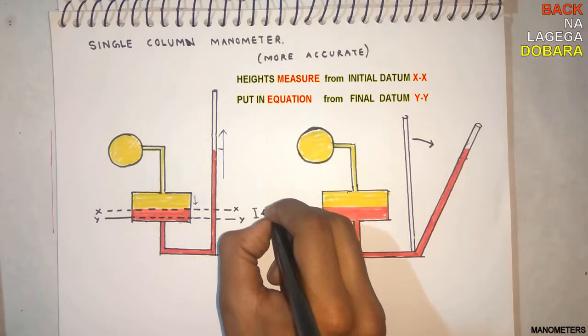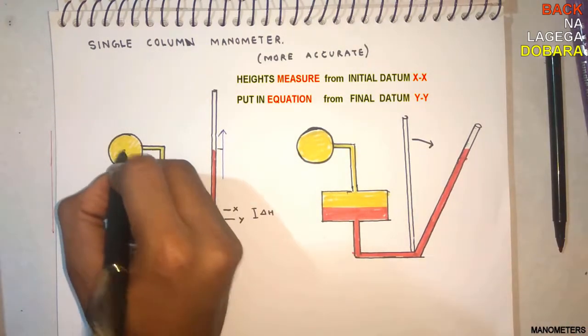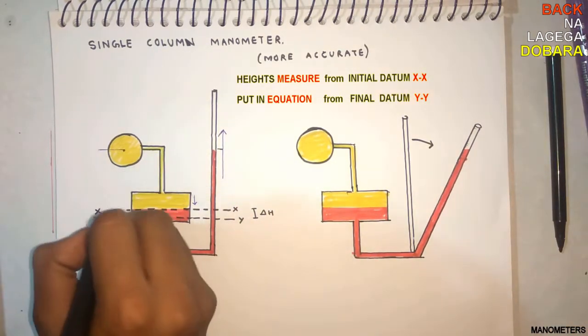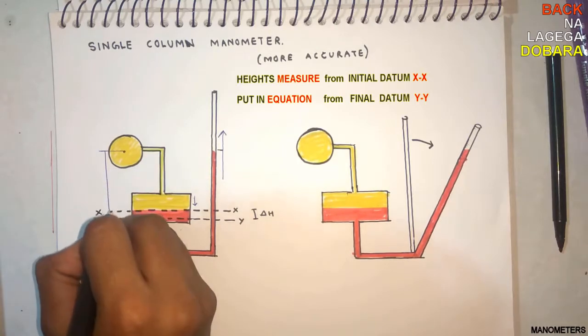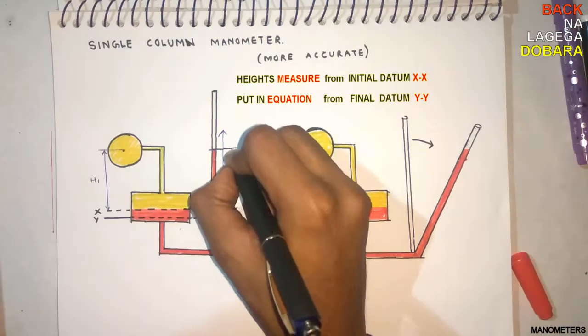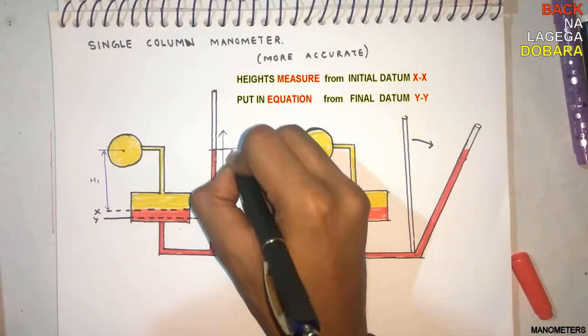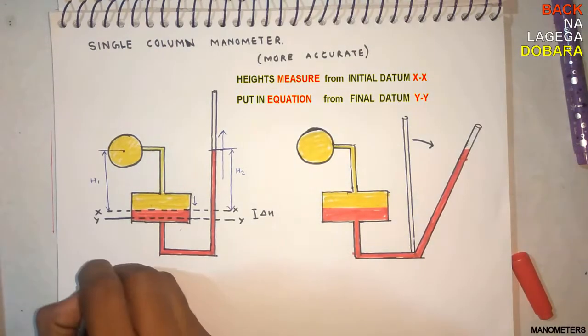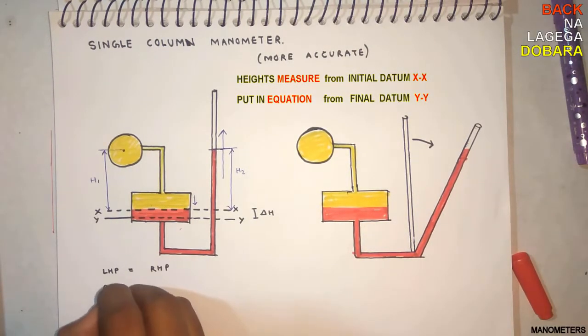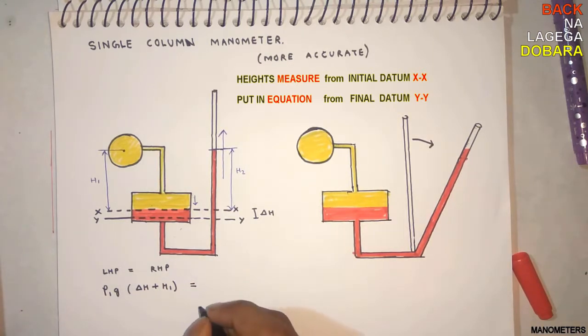Moving del H, measure the distance from center of the pipe. Let it be H1 for yellow liquid and H2 for heavy liquid. For left hand side, only one liquid, there is rho 1 G H1 initial plus del H plus pipe pressure.